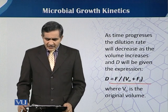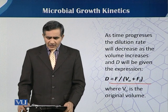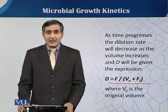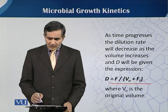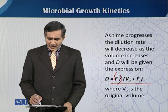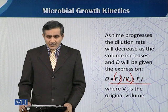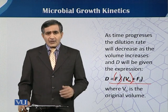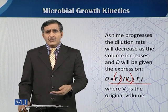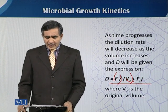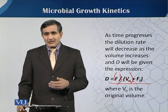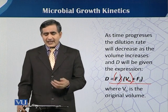If the dilution rate decreases as the volume increases, D can be expressed by the equation: D equals F over V-naught, where F is the flow rate and V-naught is the initial volume in the fermentation vessel when feeding is started. F(T) is the flow rate at that given time.